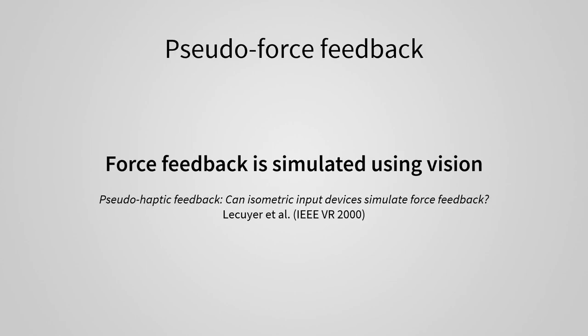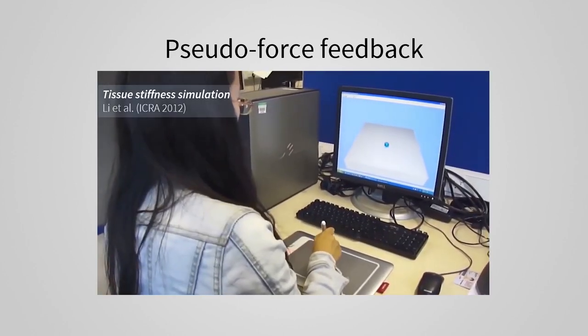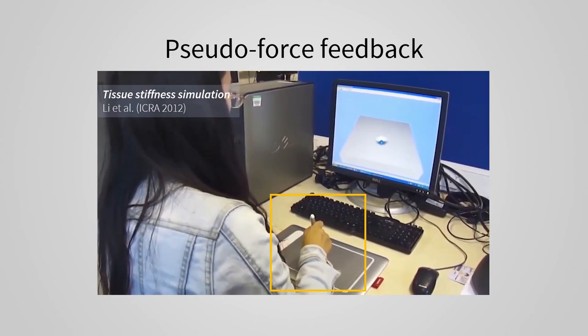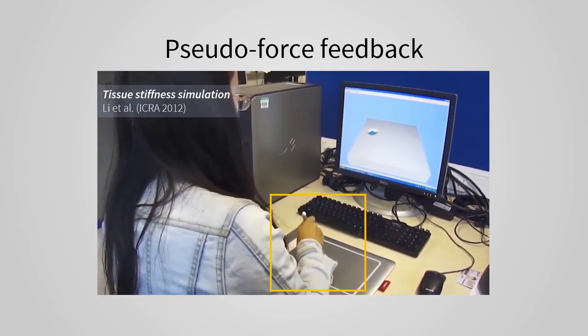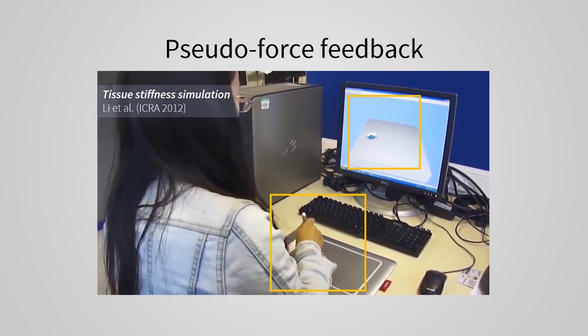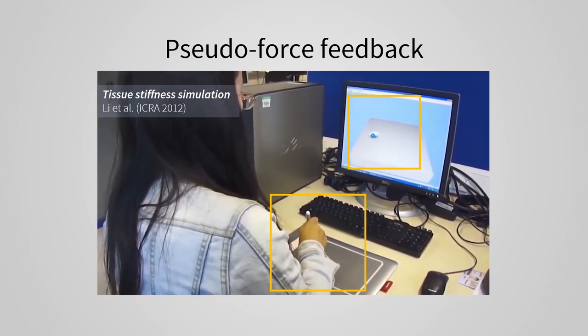In this work, we look at an approach introduced by Anatole Lakouye called pseudo-force feedback, where force feedback is simulated using vision. For example, here the touchpad surface that the user is pressing down on with the stylus is actually very stiff. But by visually changing the deformation of the virtual surface, the user feels that the touchpad surface is elastic.